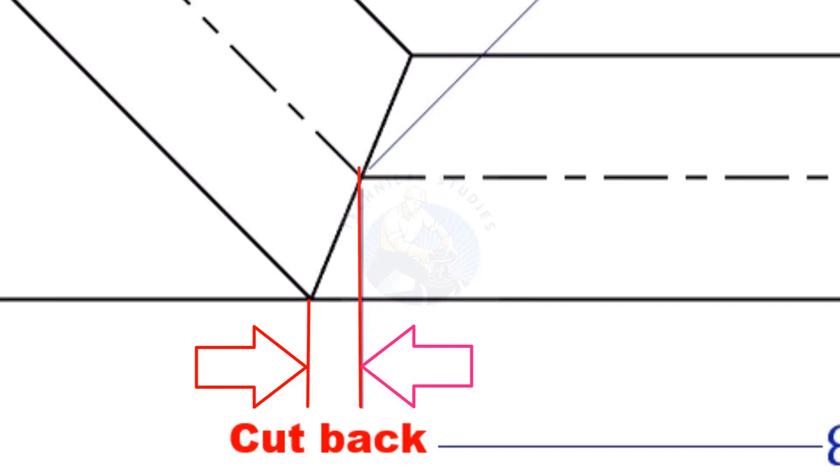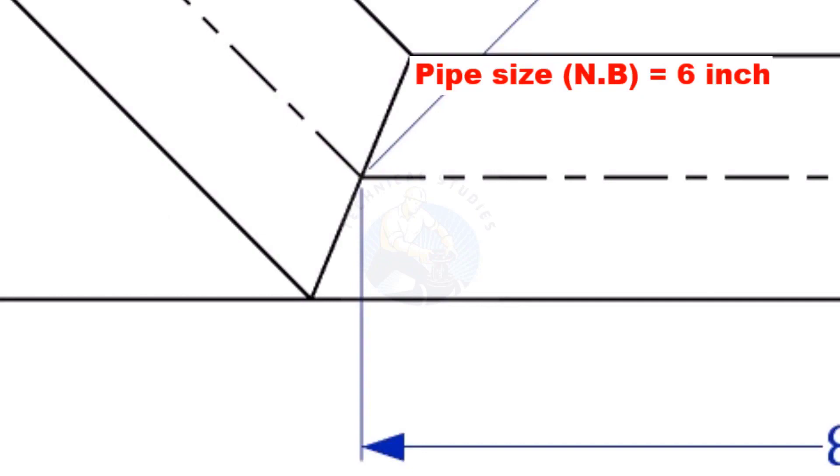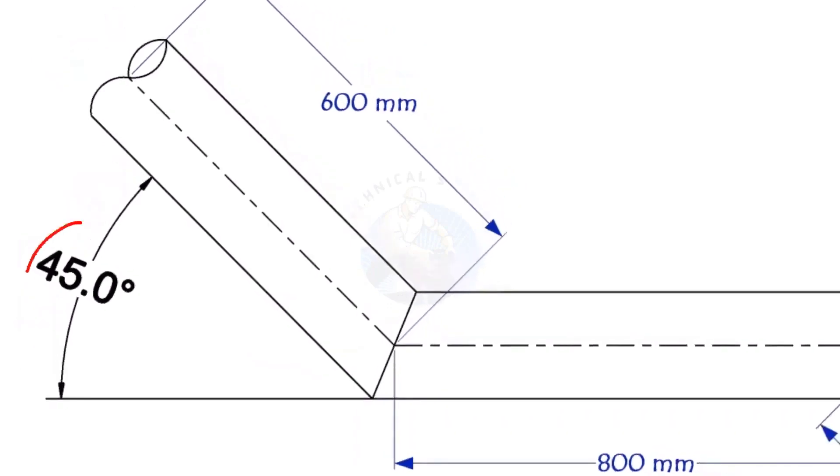To mark a miter cut, we need to know the cutback of the miter. In this offset, the nominal diameter of the pipe is 6 inch. The angle of the miter is 45 degree.